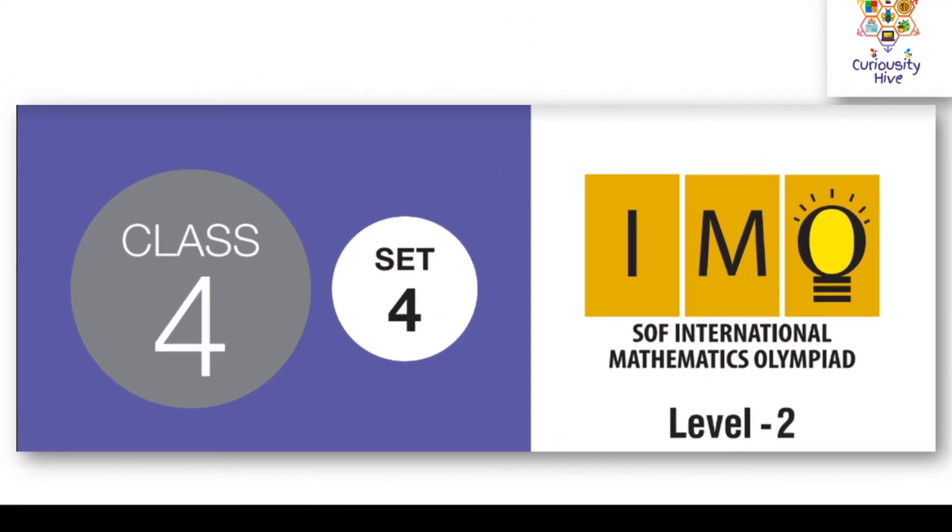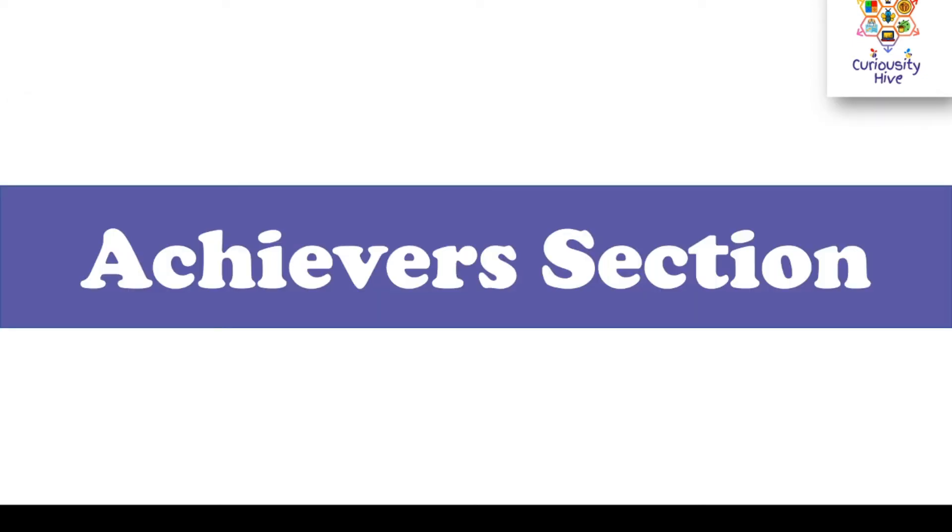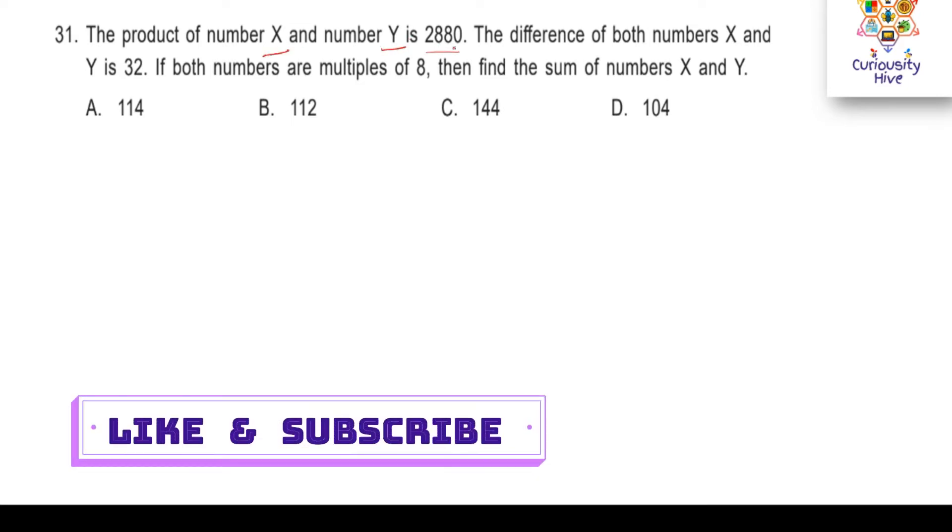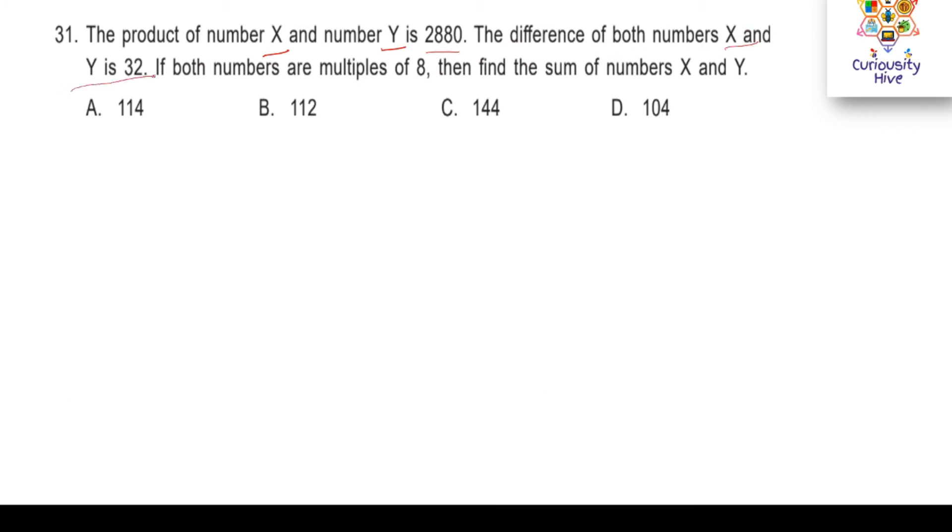Today we are looking at IMO Level 2 paper for class 4 and we are going to attempt the achiever section here. There are some tough questions. Let's go through them together. The first question in the achiever section is: the product of number x and y is 2880. The difference of both numbers x and y is 32. If both numbers are multiples of 8, then find the sum of numbers x and y. The options are given below. I will allow you some time to go through it and think about it.